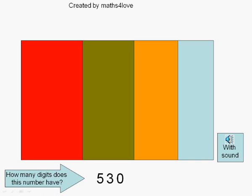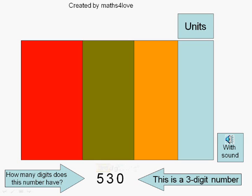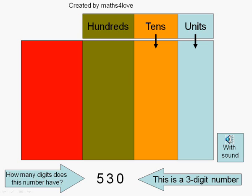How many digits does this number have? This is a 3-digit number. 1st digit, 2nd digit, 3rd digit. We are going to put the units in here, tens in here, hundreds in here, and thousands in here.